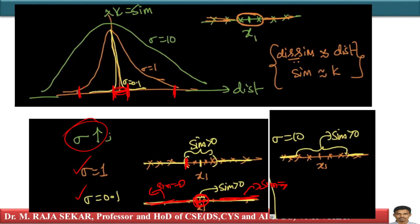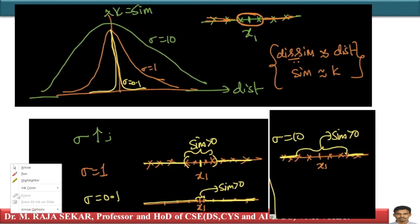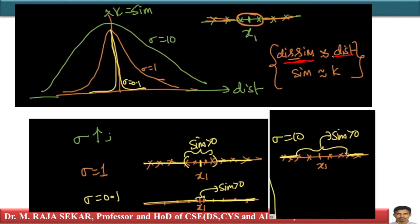For sigma equal to 1, similarity value is greater than zero inside the window, and zero outside. For sigma equal to 10 you get a big window and you can accommodate more points with some similarity value. Outside the window similarity is zero — the window size increases for sigma equal to 10. Similarity and kernel are the same meaning; dissimilarity and distance are the same meaning; similarity and distance are opposites.